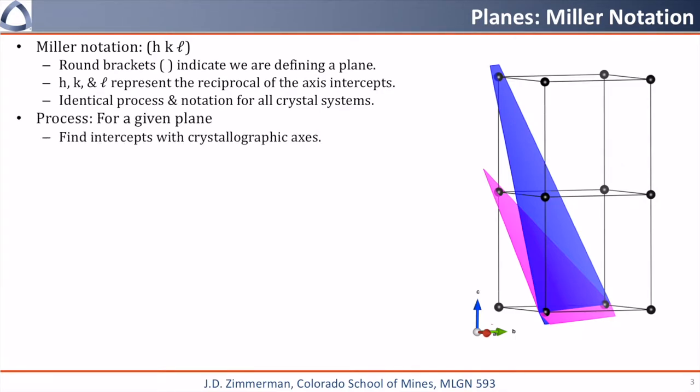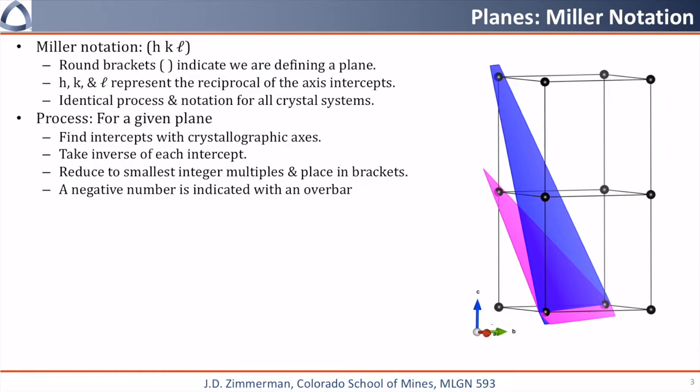For a given plane, you're going to find the intercepts with the crystallographic axes, going to take the inverse of each intercept. You're going to take that set of inverses of the intercepts and reduce them to the smallest integer multiples, and you're going to place them in brackets. A negative number is going to be indicated by a bar over that number.